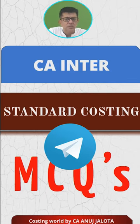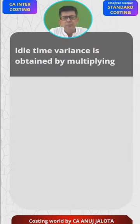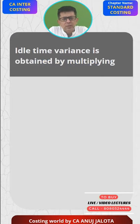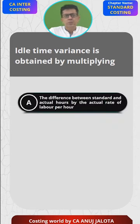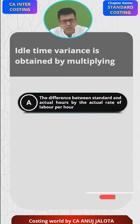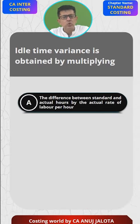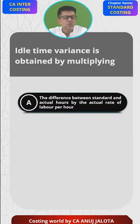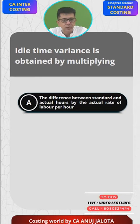Let's look at today's question: Idle time variance is obtained by multiplying — four options. Option A: the difference between standard and actual hours, multiplied by actual rate of labor per hour. Just to remind you, idle time variance comes under the labor head — it's called Labor Idle Time Variance.